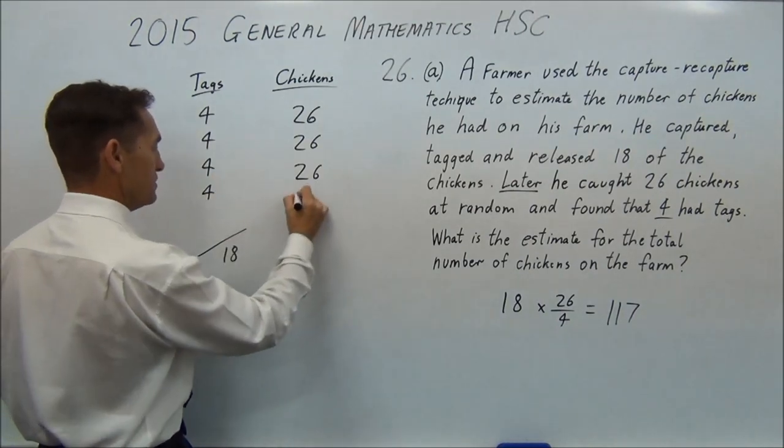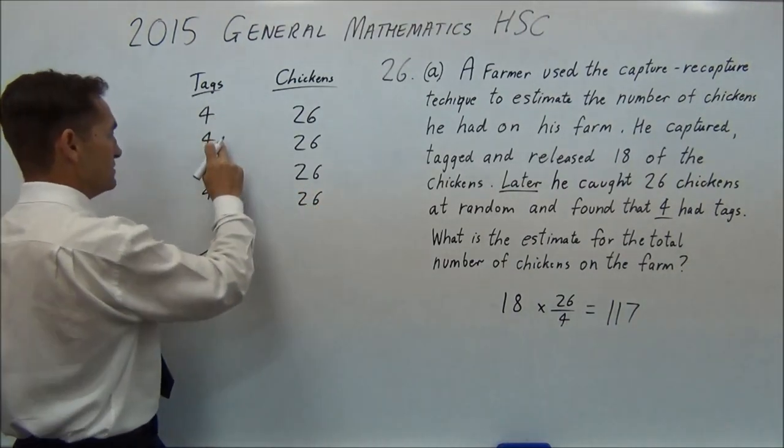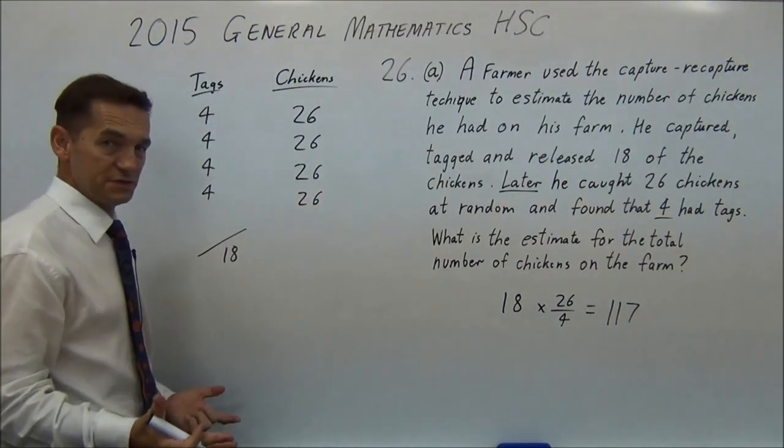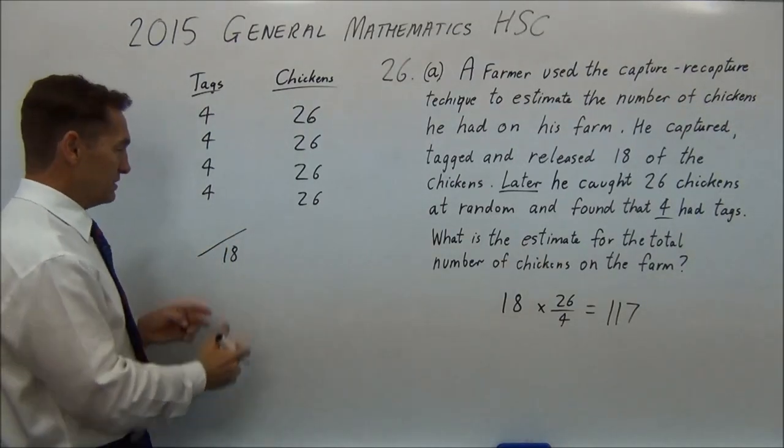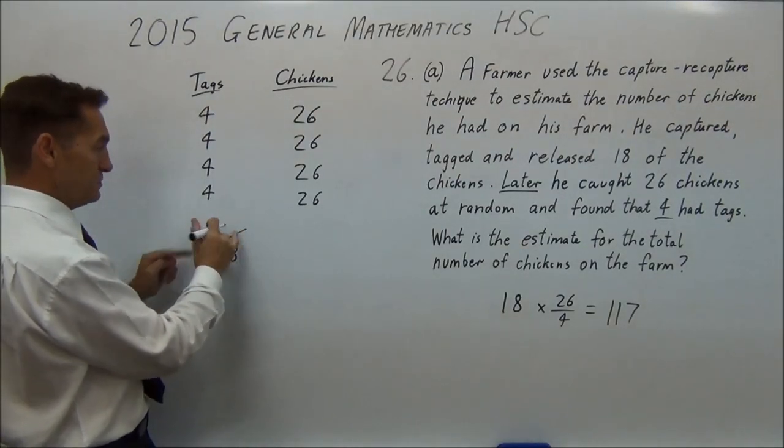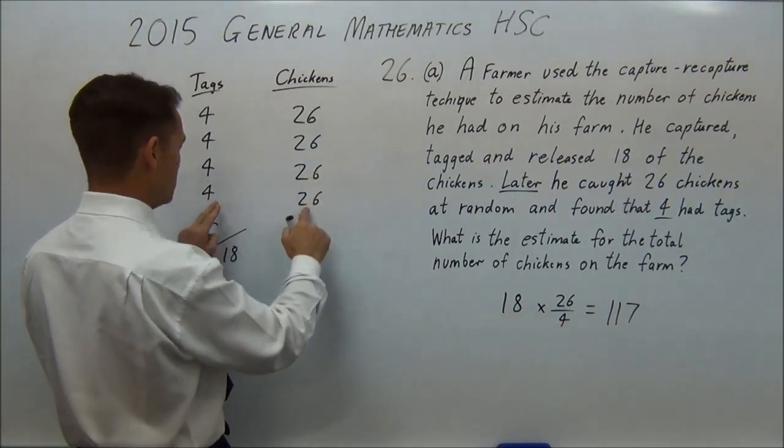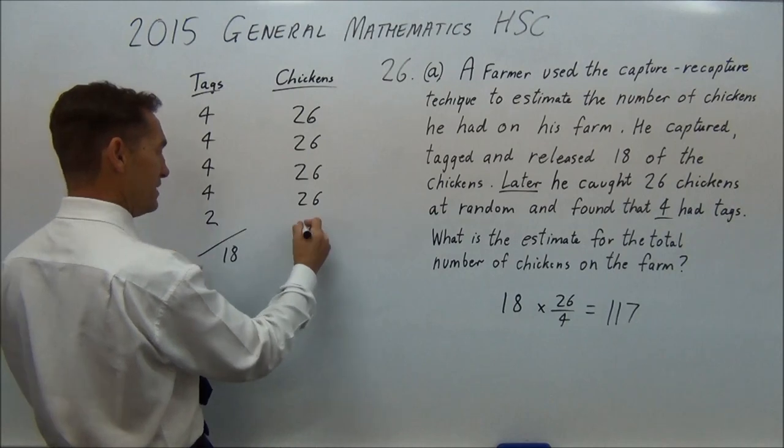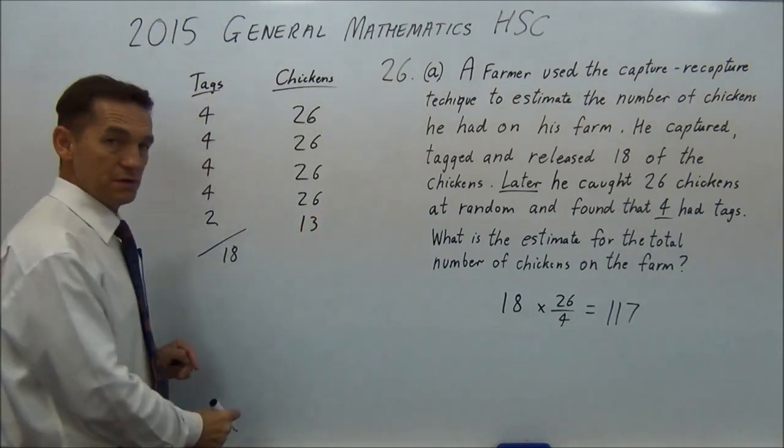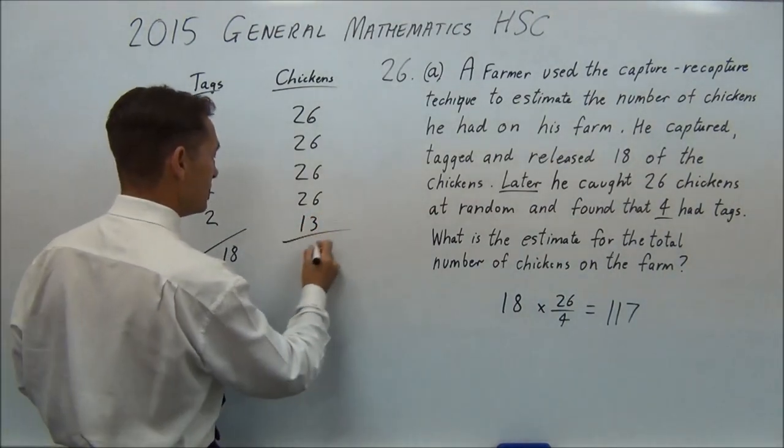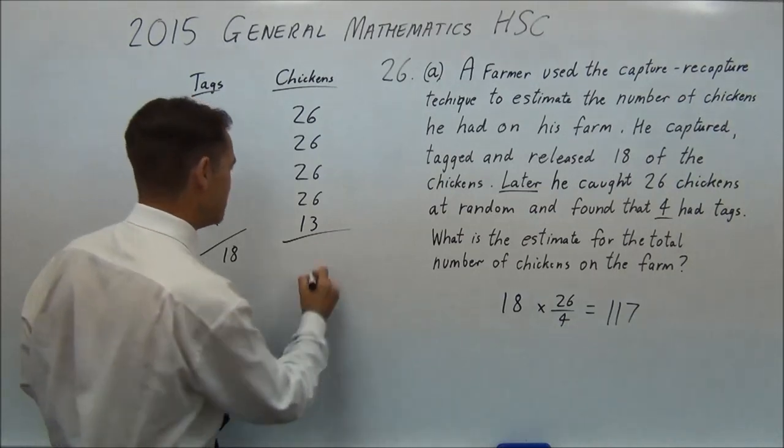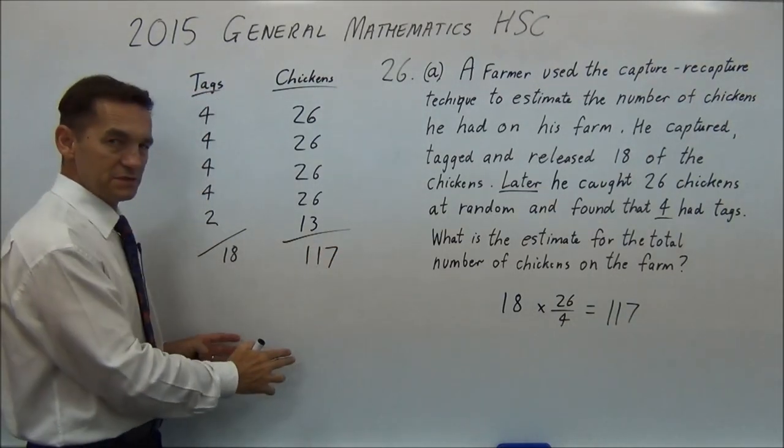So I'll add another four. Four plus four plus four plus four is 16. Nearly there. If I add four, I'm going to go too big. So I only want to add two of them. So if I add two more, I'm going to have my 18. But because that's four, I now only want to add 13. So now if I add that up, amazingly it adds up to 117, that's my answer.